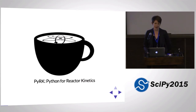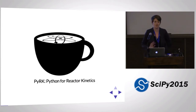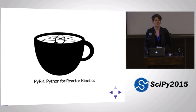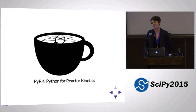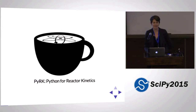So PERC is Python for Reactor Kinetics. Since nuclear reactor kinetics is maybe not a fundamental domain knowledge for most of you, we're going to go through a quick review of what nuclear reactor kinetics is. Then I will give you some very basic information about how the code is designed and quality controlled, what SciPy stuff I use to make that happen, and a very quick minimal example of a very simple reactor accident.